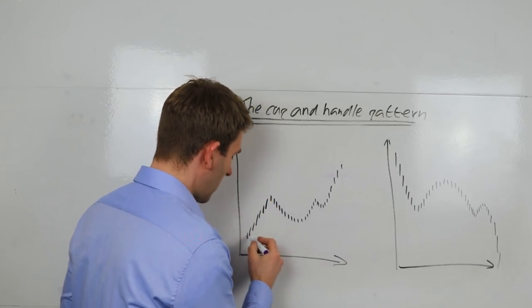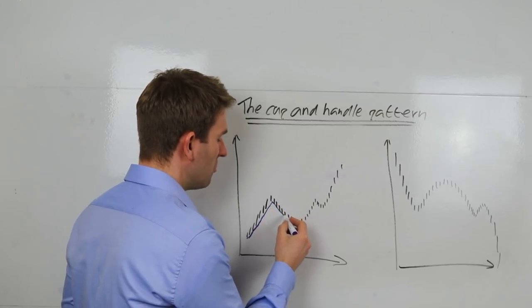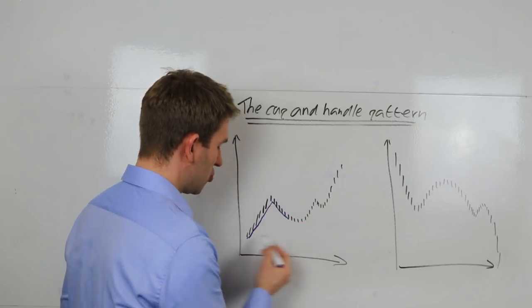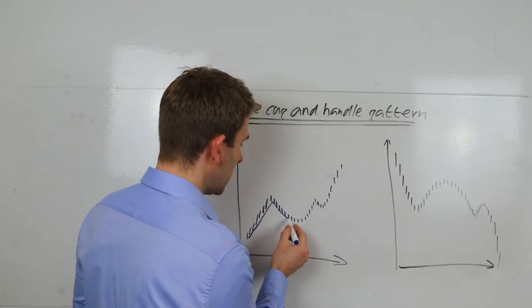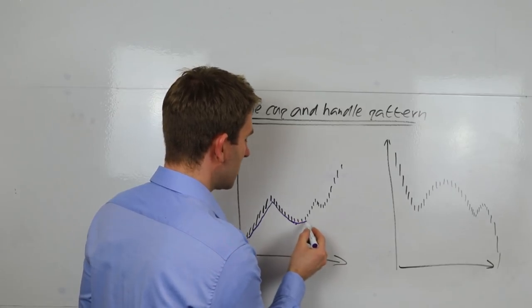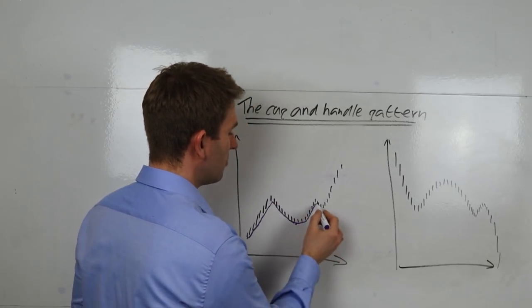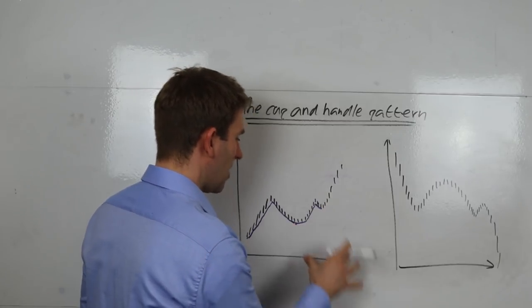This is the pattern. You've got a drive up here, then you've got a reversal that doesn't intrude too much into the initial drive. You don't want this coming all the way back. It forms a little bit of a rounding acceptance that it's about to push back up, pushes back up.